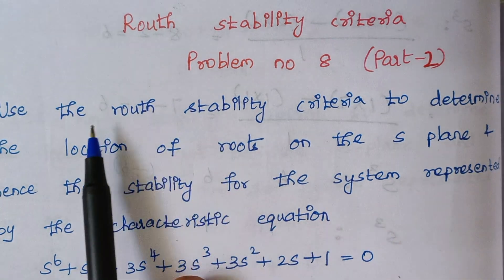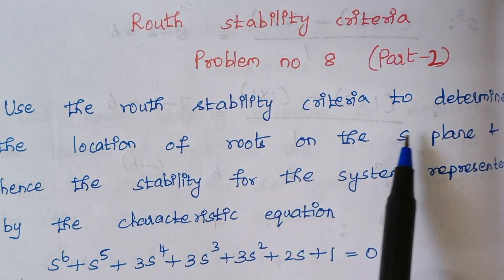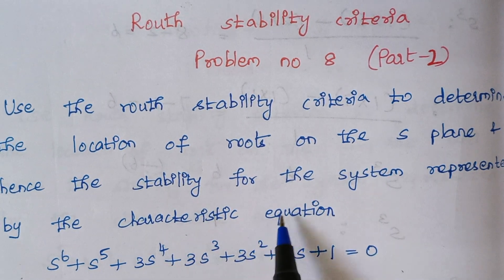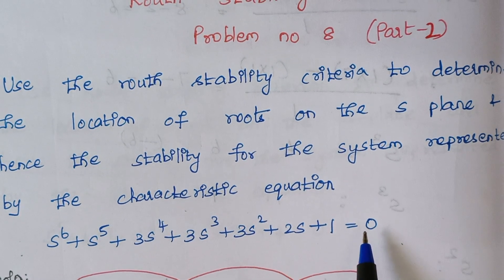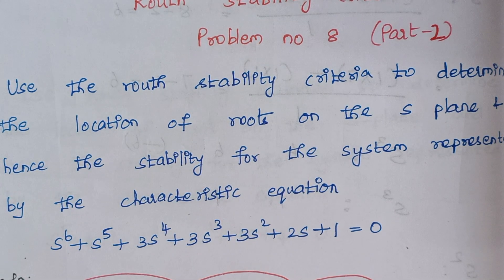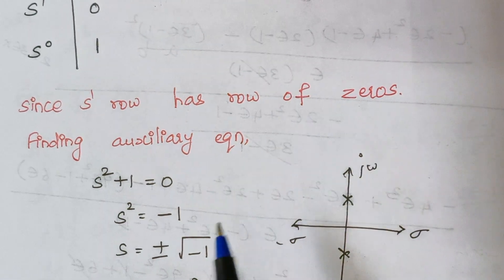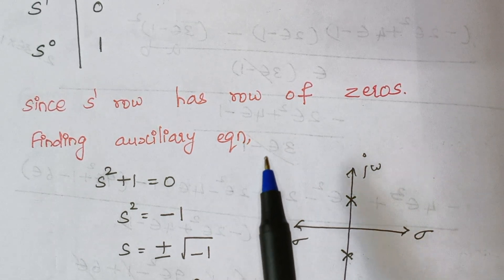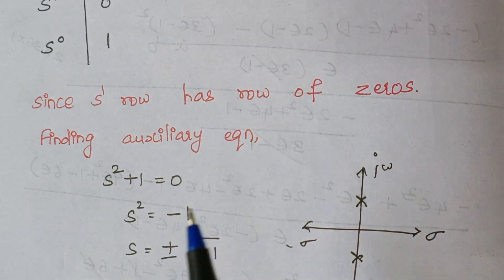The problem is: using the Routh stability criteria, determine the location of roots on the S-plane and hence the stability for the system represented by the characteristic equation. This is our given characteristic equation. From it we had found out an auxiliary equation. We are finding an auxiliary equation because in the Routh array we formed, it has a row of zeros.